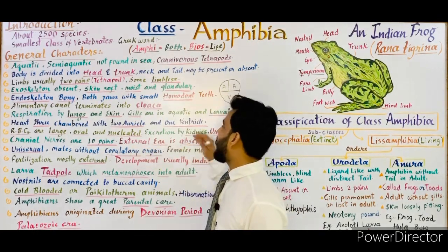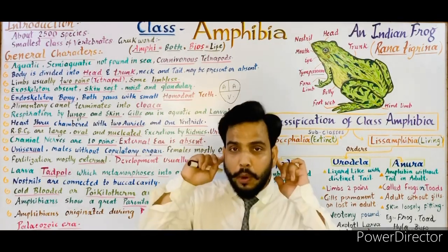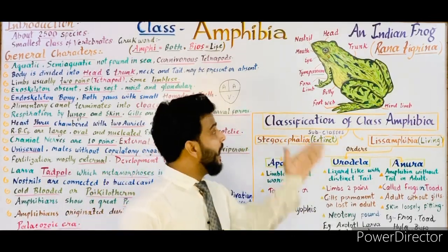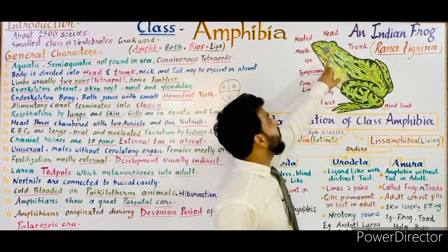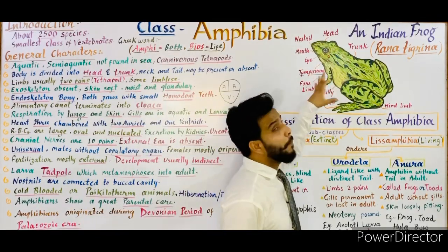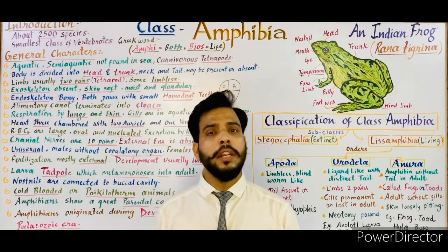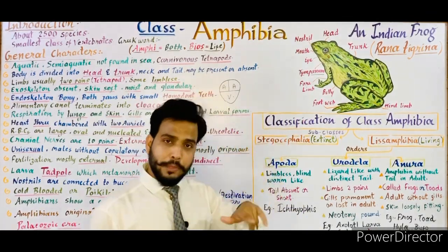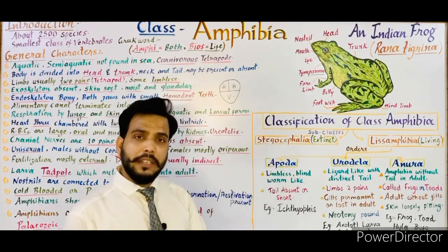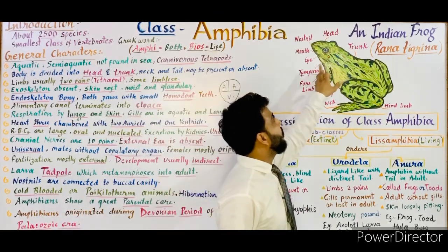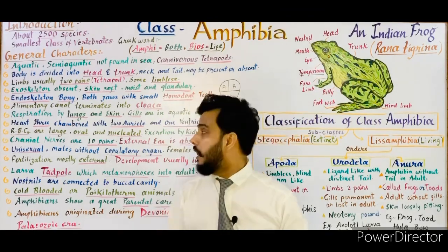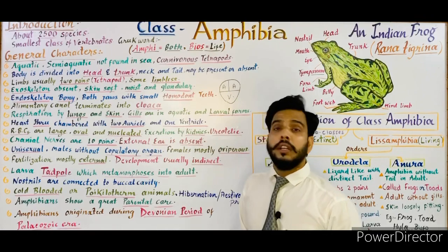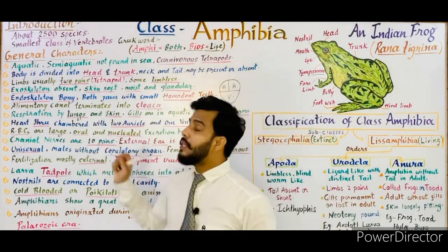The external ear is absent in amphibians. Unlike in humans where the external ear is visible, in amphibians the external ear is absent. Instead, the ear is present in the form of a tympanum, which is essentially the eardrum. So in amphibians, the external ear is absent but hearing occurs through the tympanum.